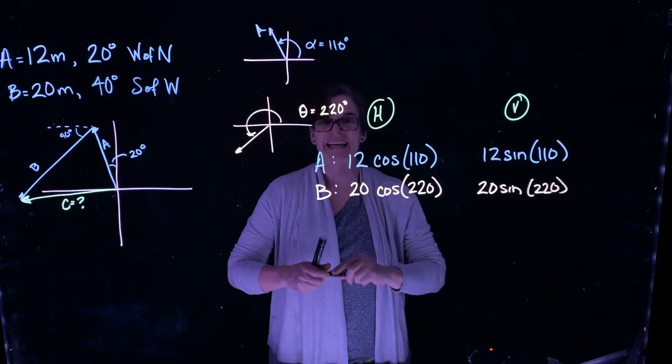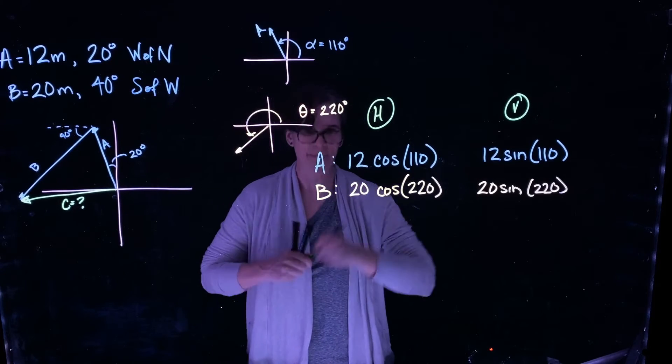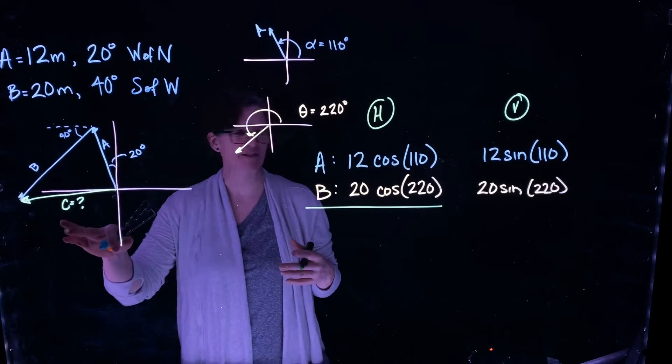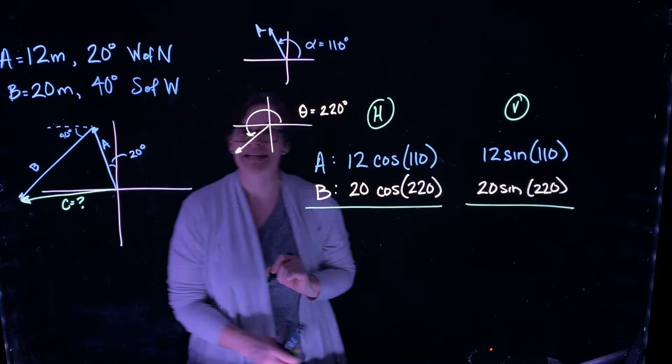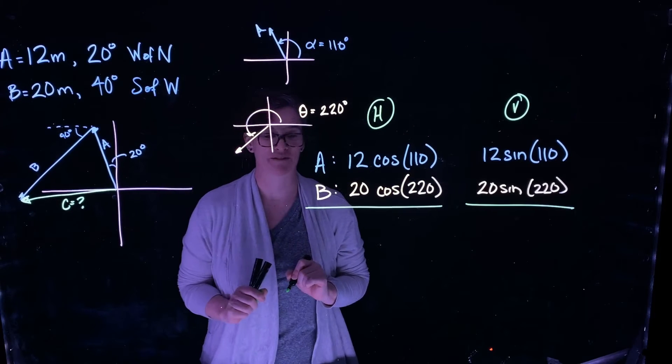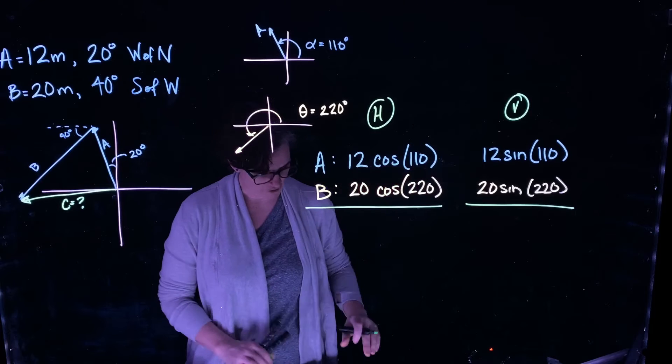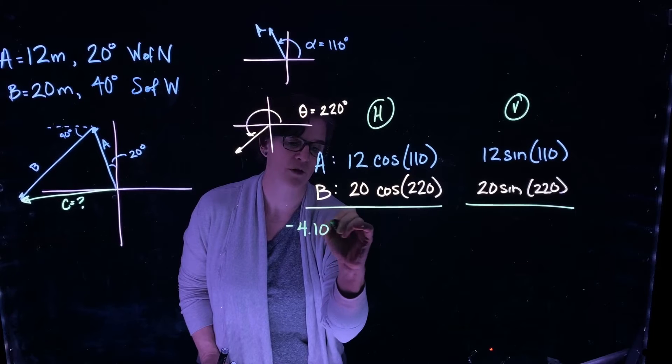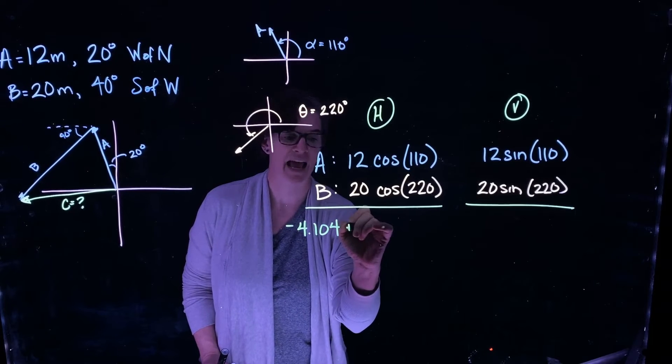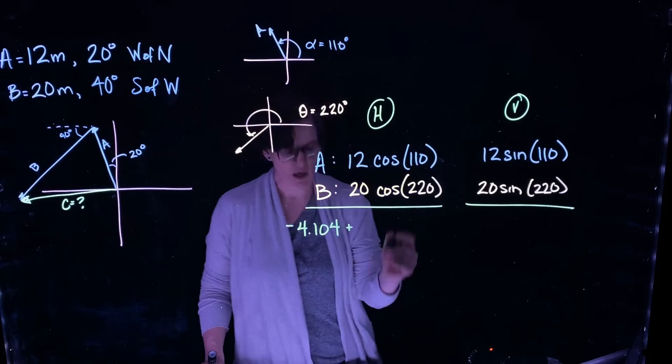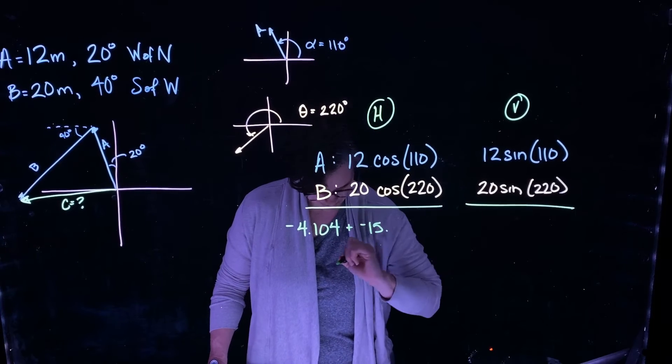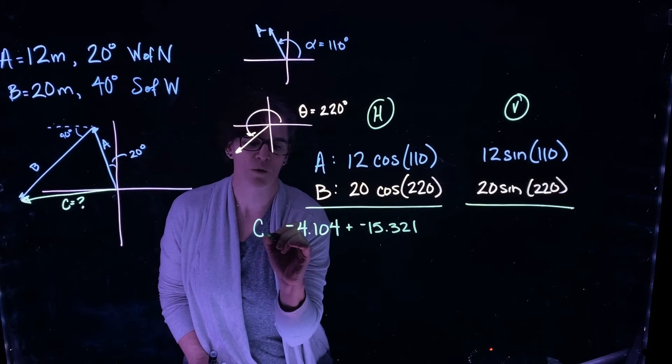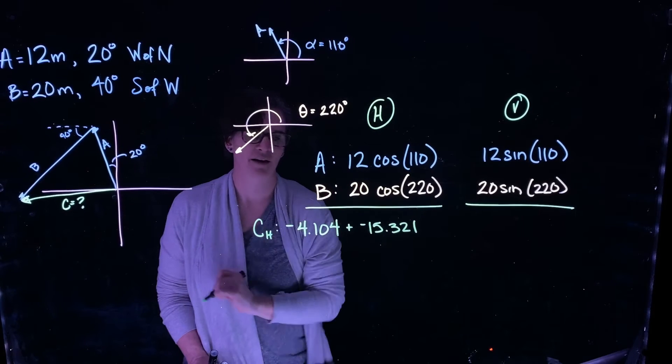Now I can simply add these two up. I can add the horizontal component to get the horizontal component of my vector C. So 12 cosine of 110 is minus 4.104. I'm going to add that to 20 cosine of 220, which is minus 15.321. This is going to be the horizontal component of my vector C.